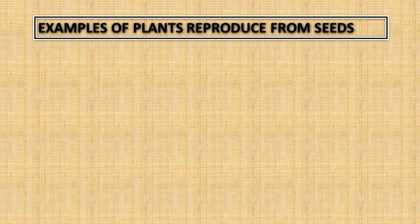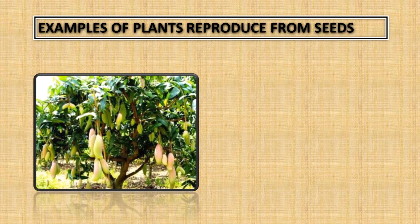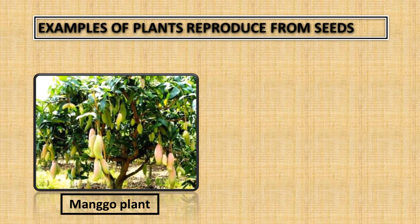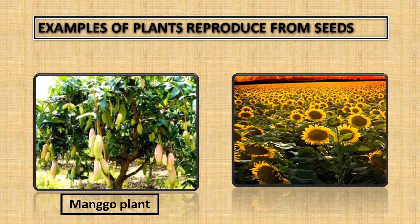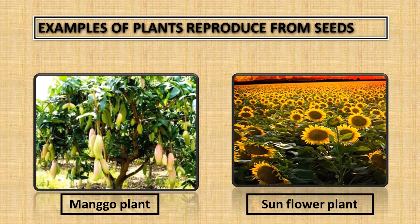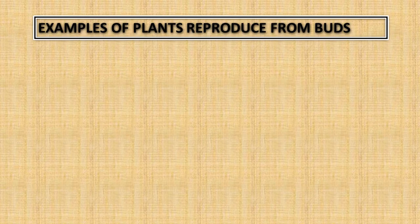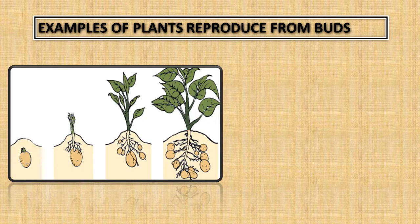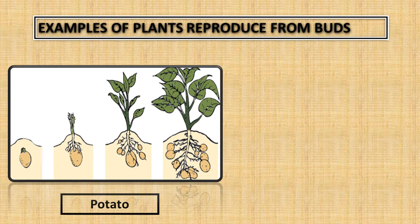Examples of plants that reproduce from seeds: the mango plant and the sunflower plant. Examples of plants that reproduce from buds: potato and ginger.